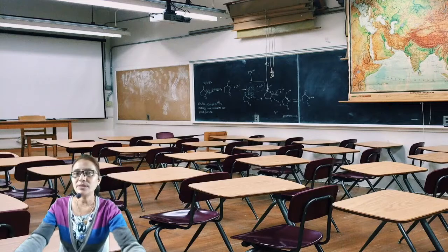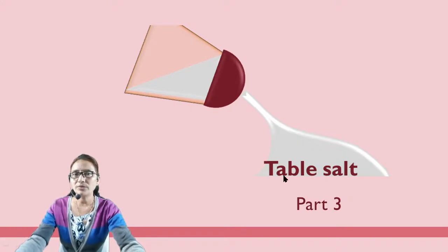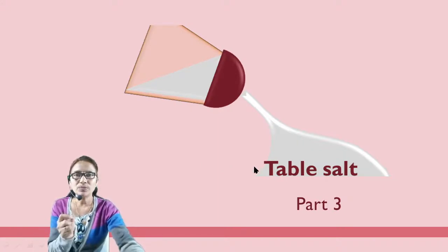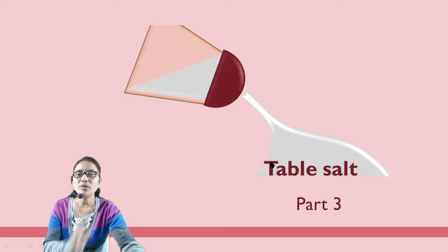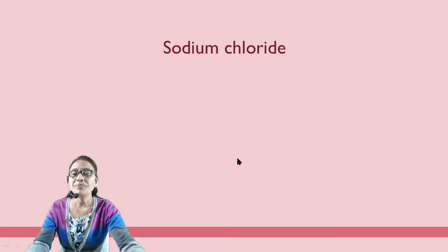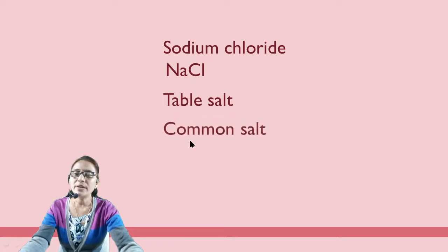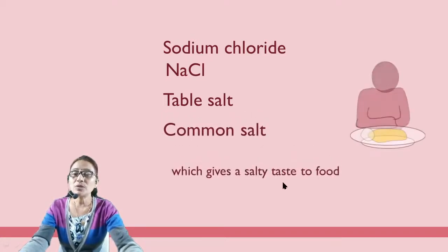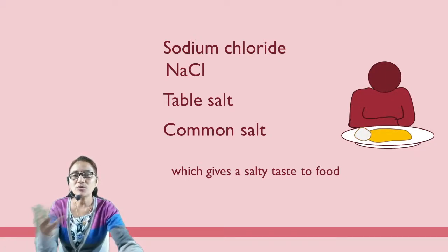Hello students, welcome back to inter-science. Today we will discuss about table salt, which is important for our food. The chemical name of table salt is sodium chloride, with molecular formula NaCl. It is also called common salt and it gives the salty taste to our food, making it an important ingredient for most foods.